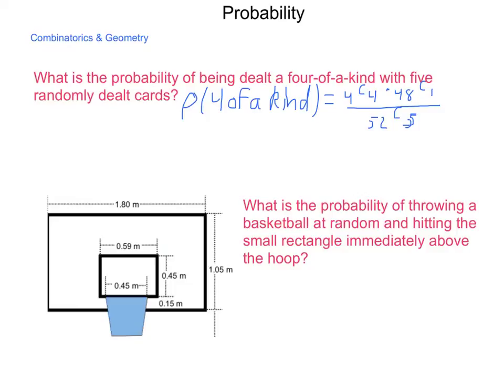4 choose 4, there's one way to do that. 48 choose 1, there are 48 ways of doing that, divided by 52 choose 5. When we compute 52 choose 5, we get 2,598,960 ways of doing it. When we simplify that, we get this coming out to be about 0.002%. If you're somebody who likes to play poker, the likelihood of getting 4 of a kind, a very high hand, is about 0.001 of a percent of the time that it would happen.